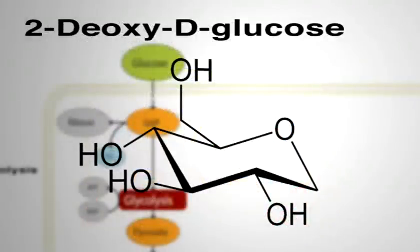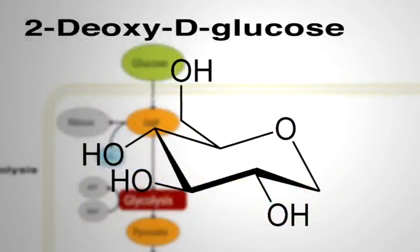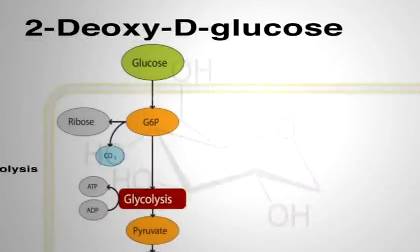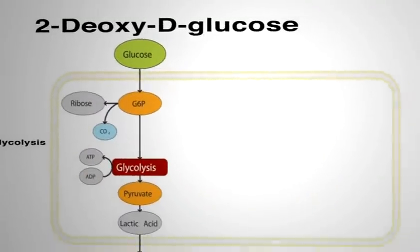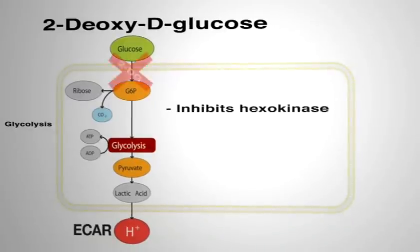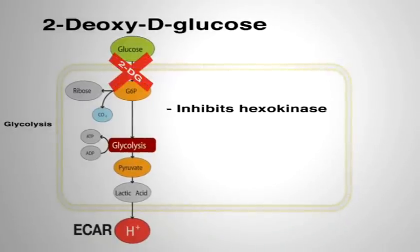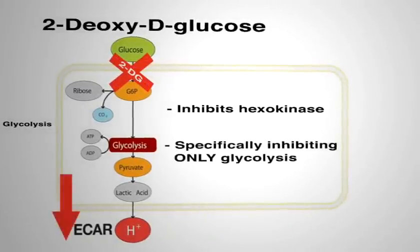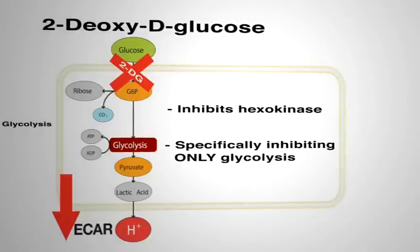The second modulator used was 2-deoxyglucose. 2-DG is a glucose analogue that inhibits hexokinase, the first enzyme in the glycolytic pathway, thus specifically inhibiting only glycolysis.